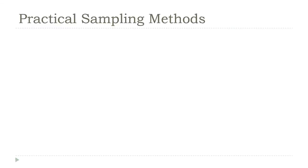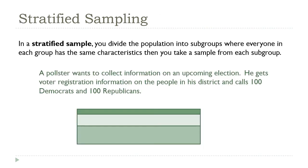Now that we've introduced randomness as an important element of the sampling process, let's take a look at some specific sampling methods and see how this is actually applied in specific scenarios. The first method is called stratified sampling. This is a method you could use when your population breaks down naturally into categories.